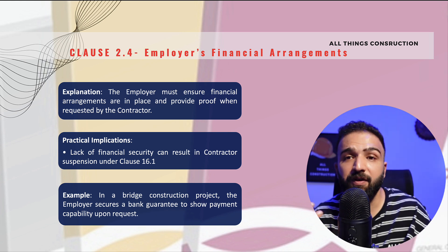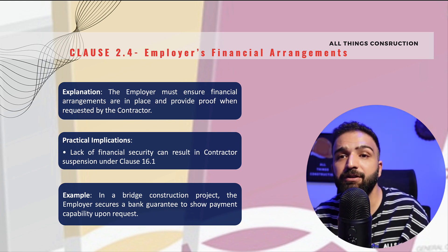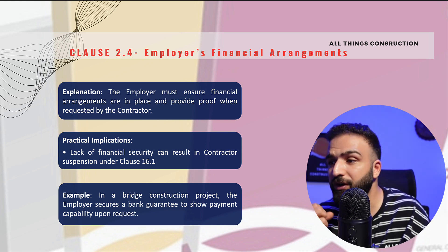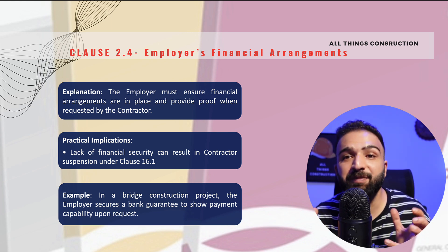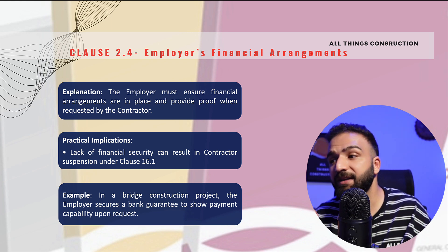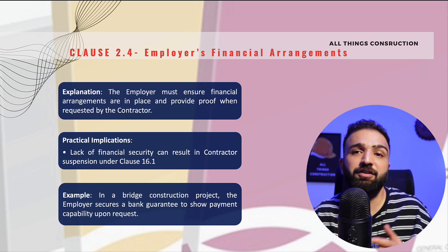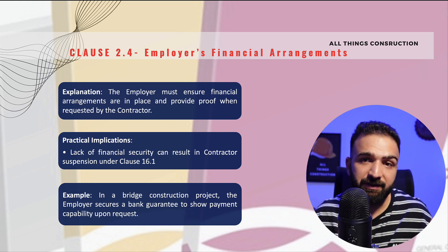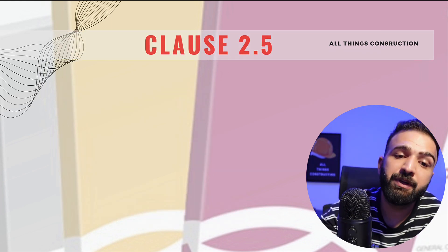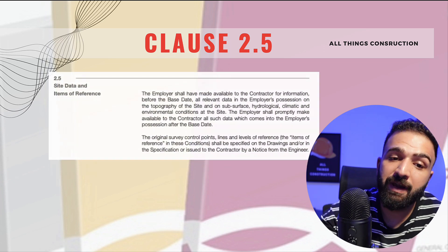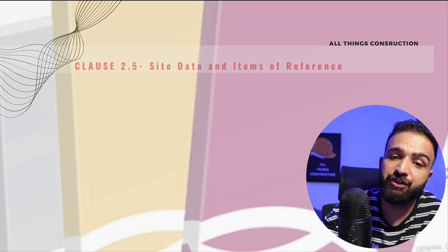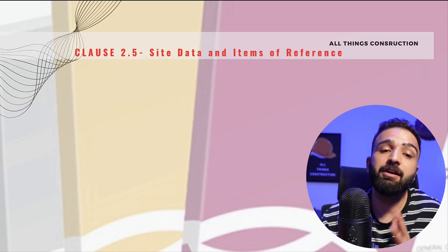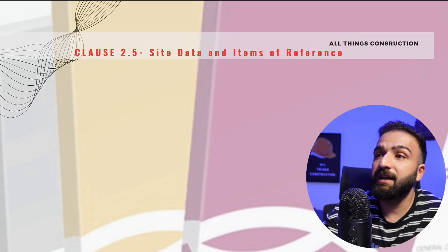The key takeaway from Clause 2.4 is that, apart from what we discussed, this clause ensures financial transparency between parties and mitigates risk. Let's jump to Clause 2.5 — feel free to pause.